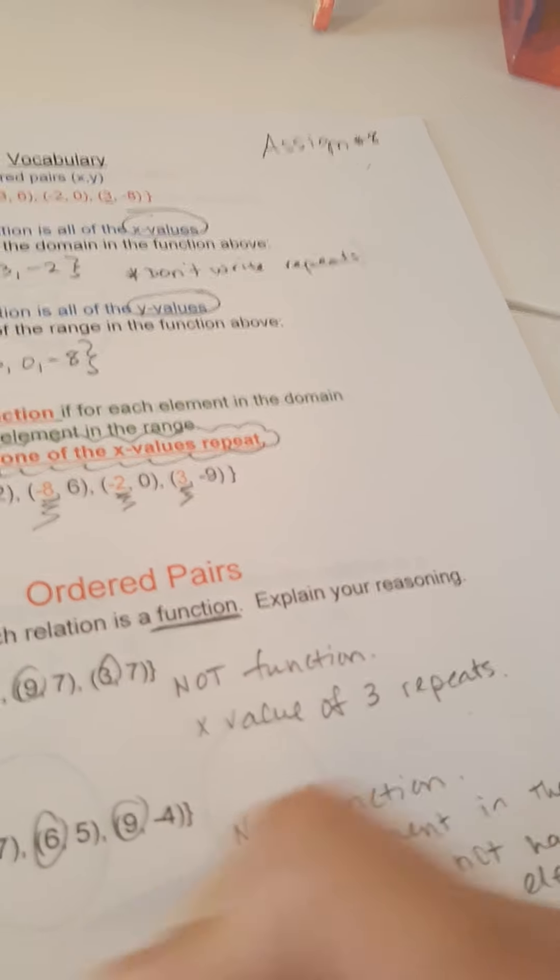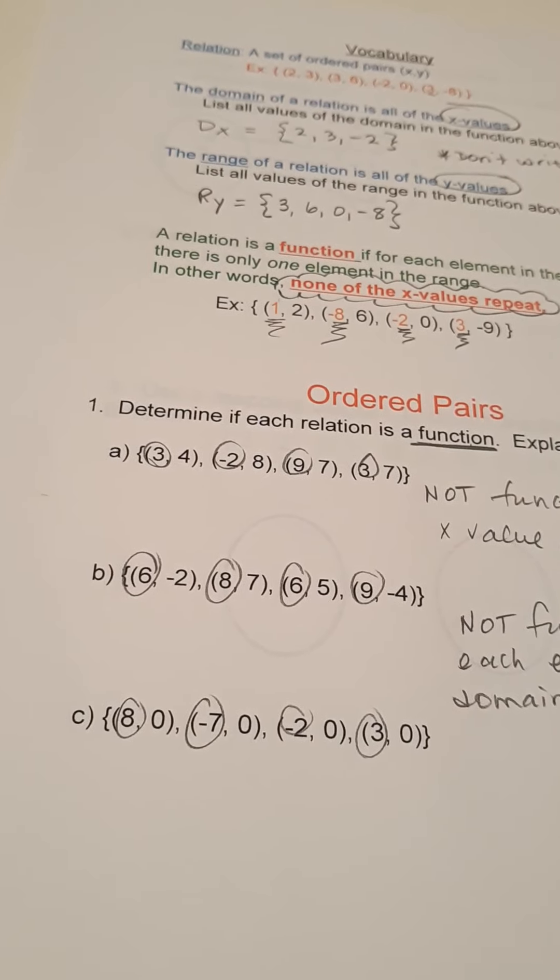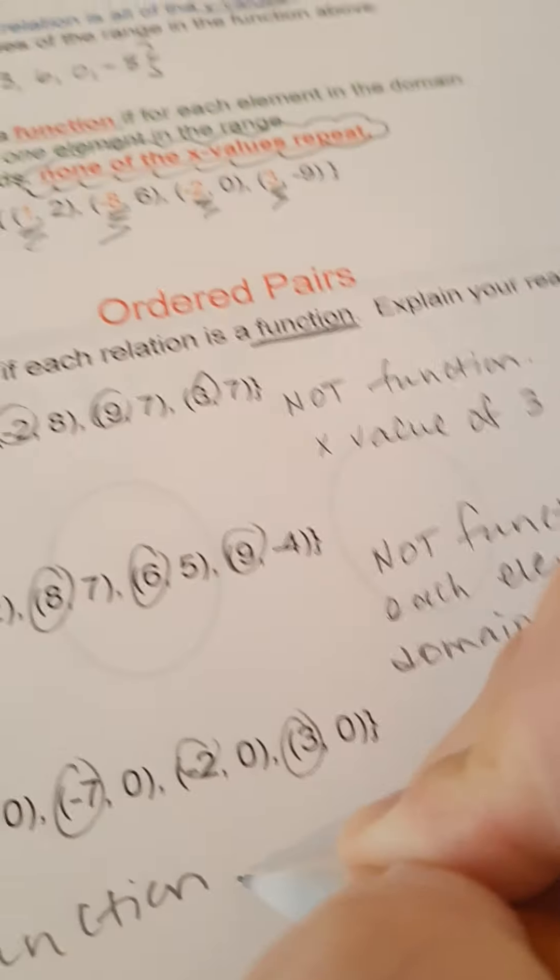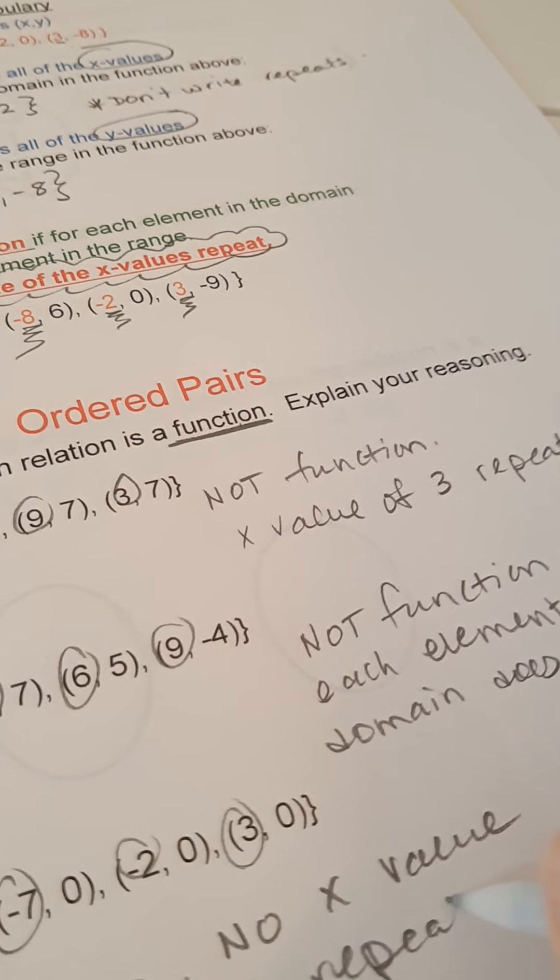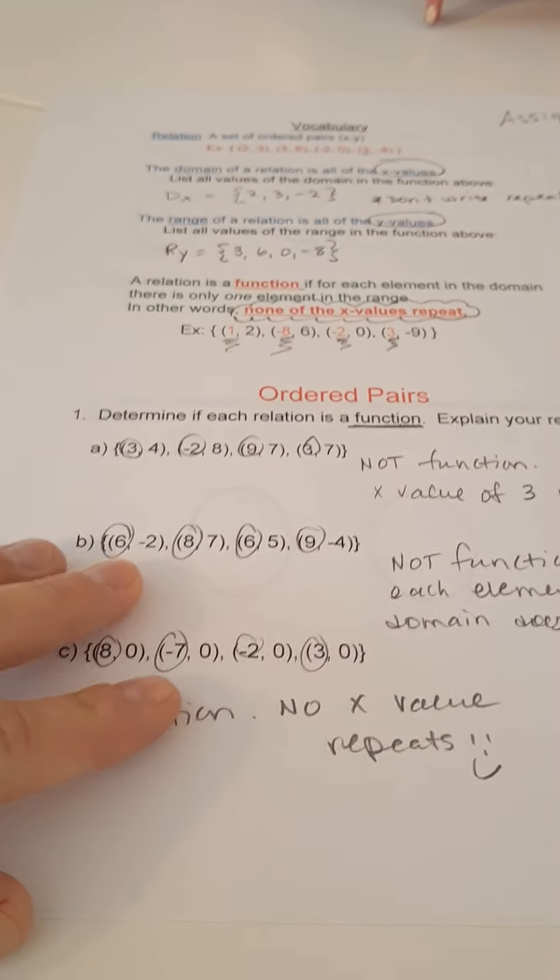I don't prefer this explanation because it takes so long to write out. So you could just simply say the x value of 6 repeats. And then for c, again, we're just looking at the x values. None of them repeat, so it's a function. No x value repeats.